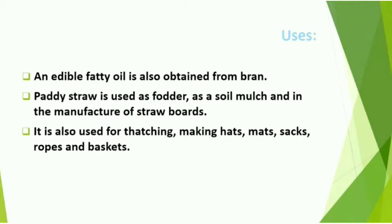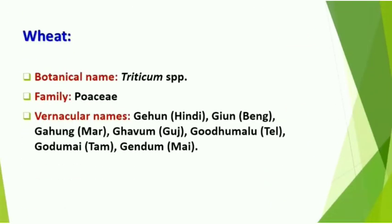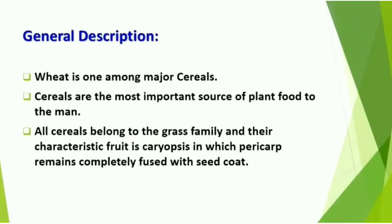We shall move on to the next crop, that is wheat. The botanical name is Triticum aestivum. It also belongs to the family Poaceae or Gramineae. In India, it is called gehun in Hindi, and it has many vernacular names as per local languages. Wheat is one of the major cereals — chapati is the most common food in all the states of India. All cereals belong to the grass family and their characteristic fruit is caryopsis, where the pericarp remains completely fused with the seed coat.